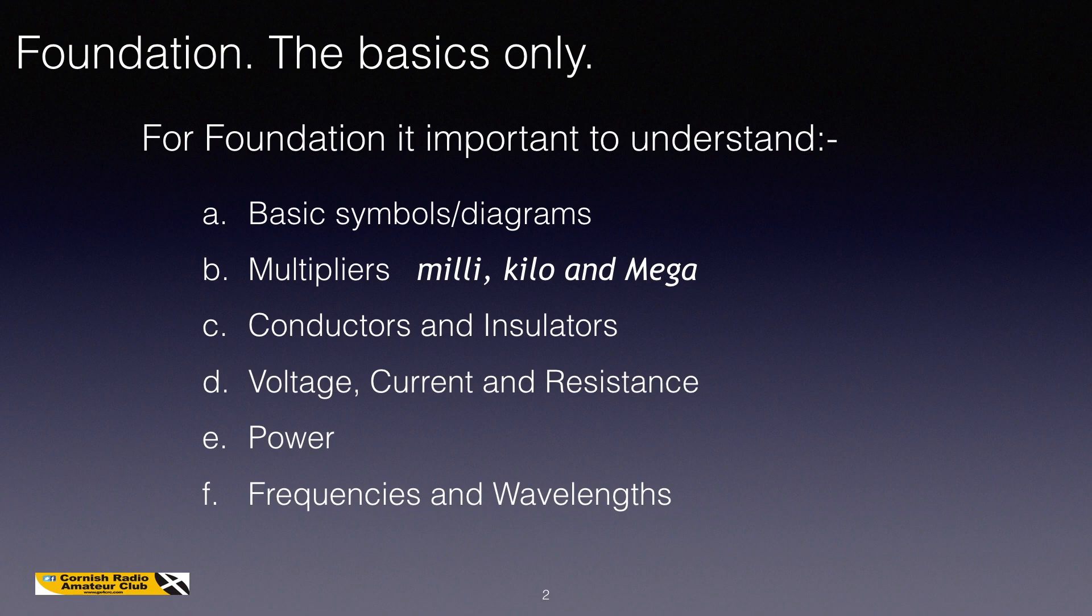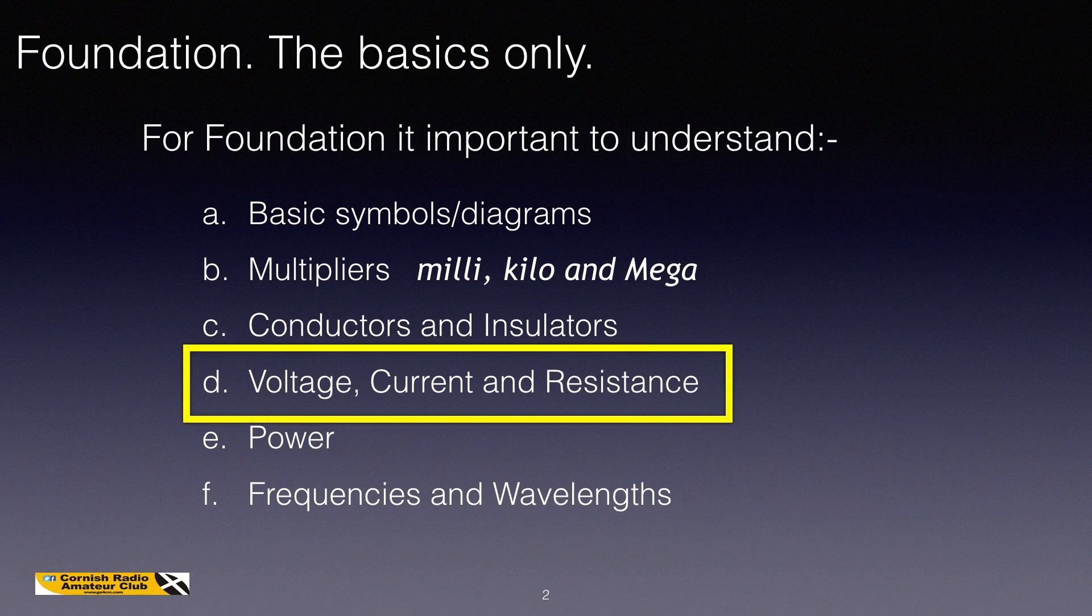These are the items we've been looking at in Technical Basics. We've covered basic symbols and diagrams, multipliers particularly milli, kilo and mega, and the units needed for the Foundation course. We've had a quick look at conductors and insulators, and today we're looking at voltage, current, and resistance.